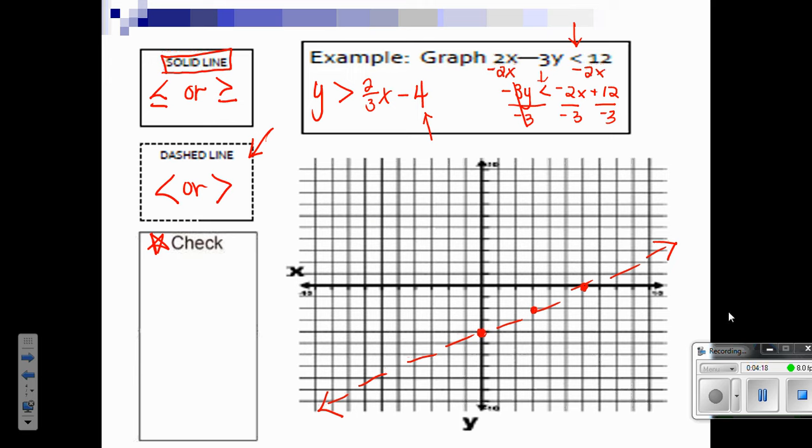Now you have to decide where you're going to shade. Do I shade above or do I shade below? This is where checking is going to come into play. Pick a point anywhere on the graph. I hear you say 0, 0. So I am going to try the point 0, 0. I am going to plug in the point 0, 0 into the original equation. Always use the original equation. I'm going to plug 0 into x and 0 into y, and I am going to solve the one side. 2 times 0 is 0, minus 3 times 0 is 0. That's 0.